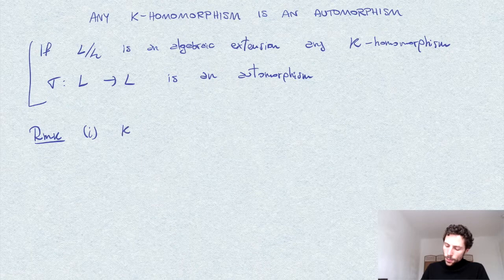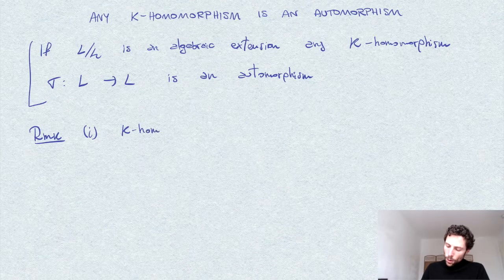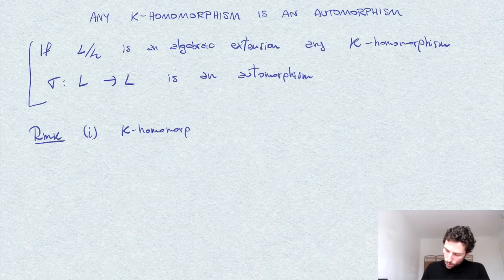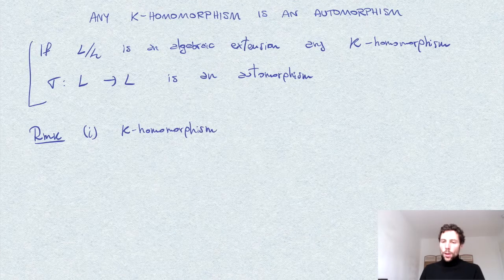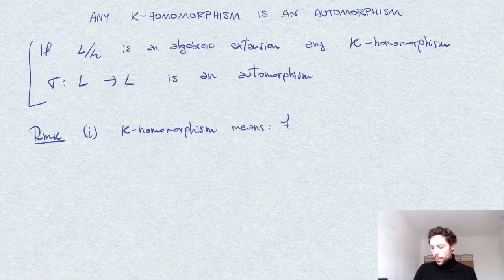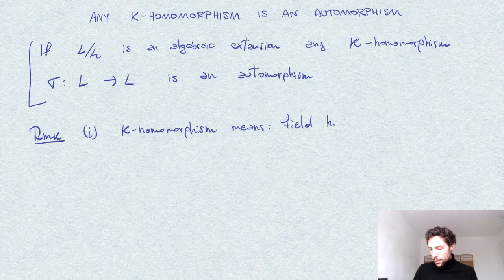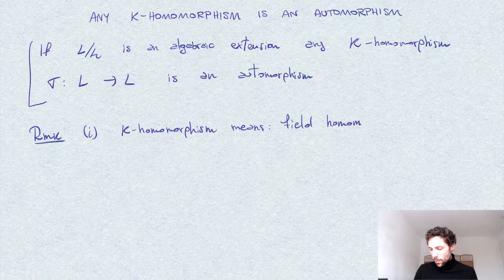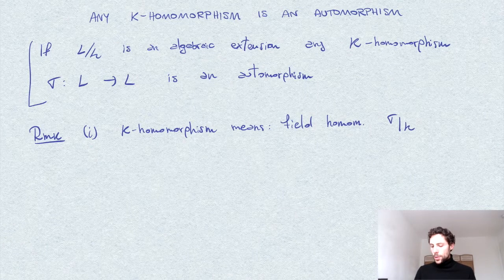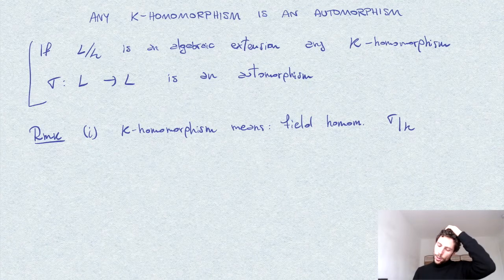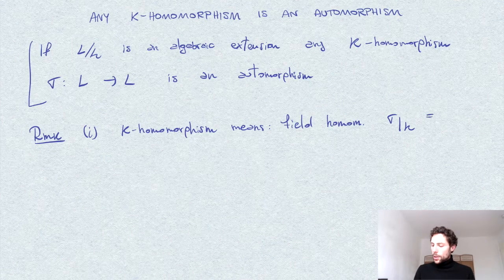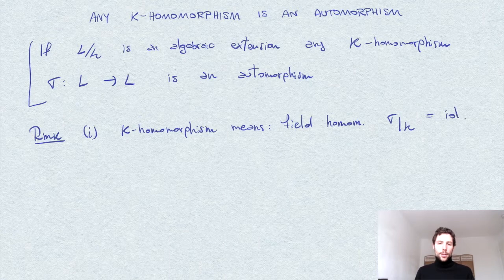So one, k-homomorphism means a field homomorphism, which acts as the identity on the field. It's always good to remind this. So this means a field homomorphism L into itself such that the restriction of sigma to the field k is the identity over k.